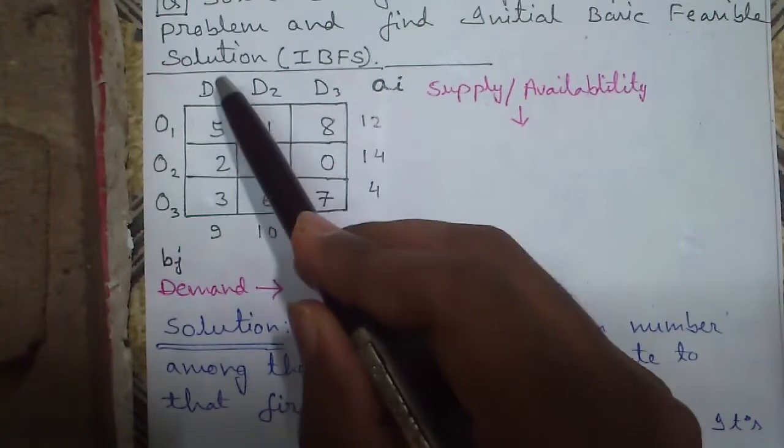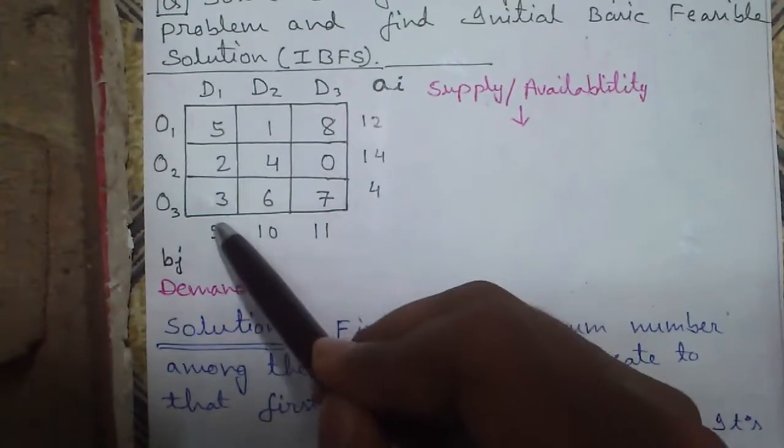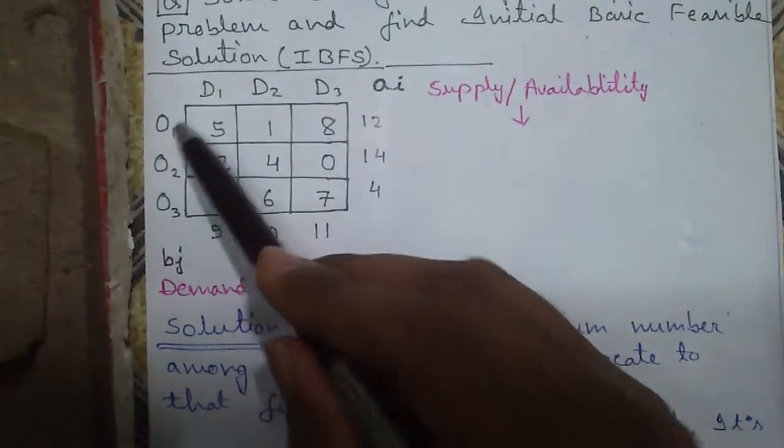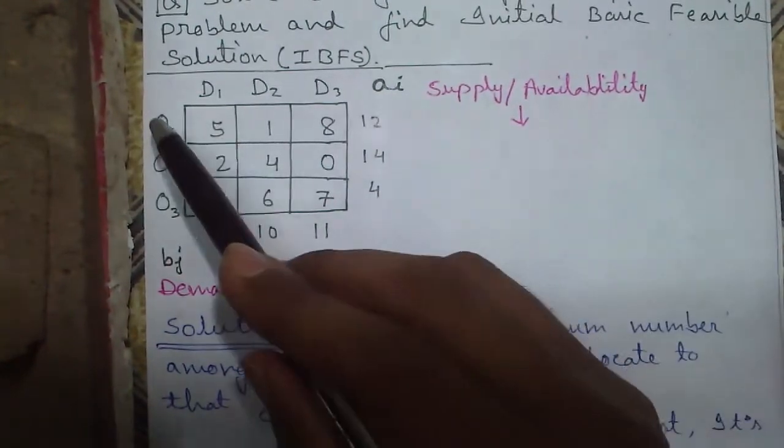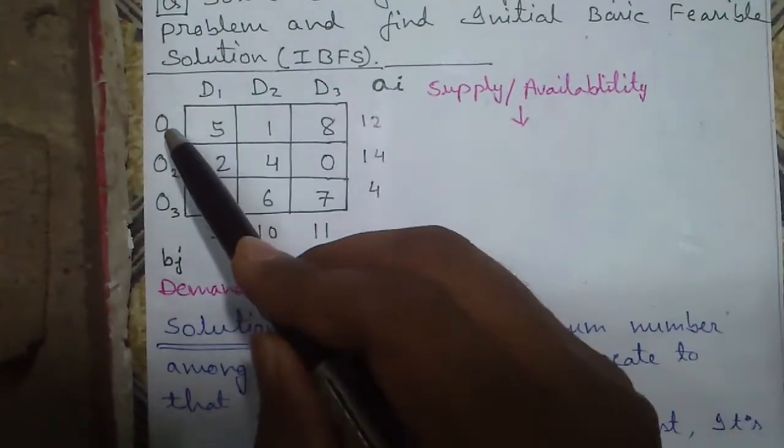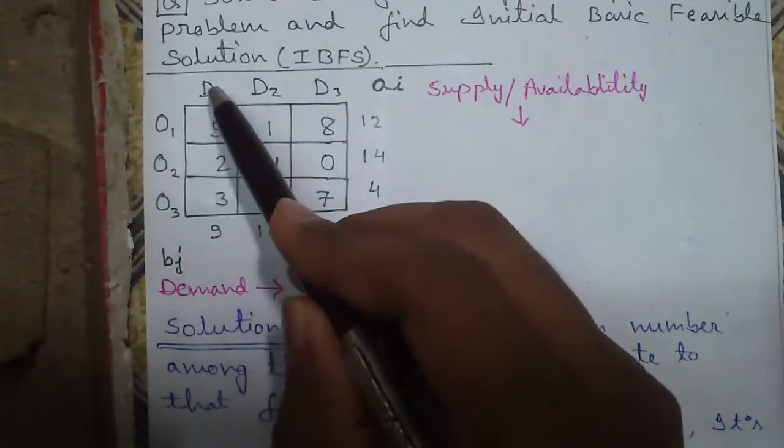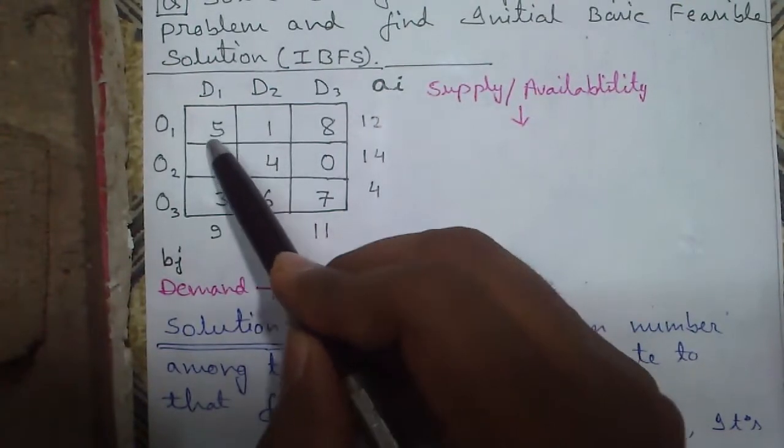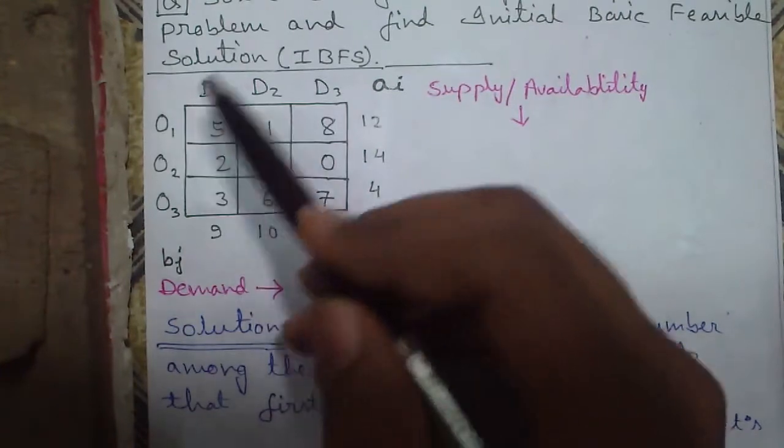So demand of customer D1 or destination D1 is 9 units of goods and O1 we have 12 units of goods in stock. And if we allocate or transport 1 unit of goods from O1 to D1 our cost of transportation will be 5 units. That may be 5 rupees or 5 dollars.